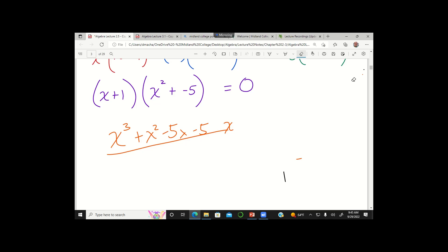So now what I have in that bottom purple line is I have a linear factor x plus 1 times a quadratic factor, x squared plus negative 5. And rather than writing plus negative 5, I could just write minus 5.